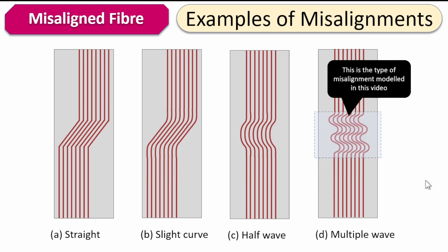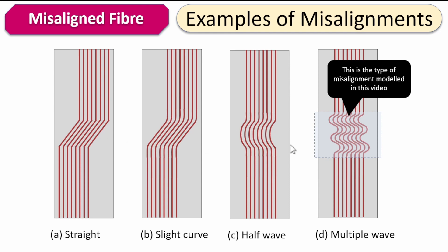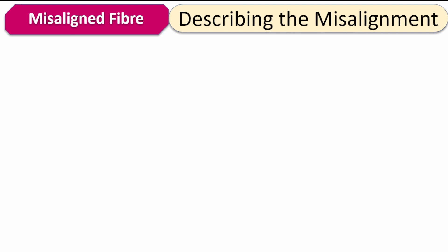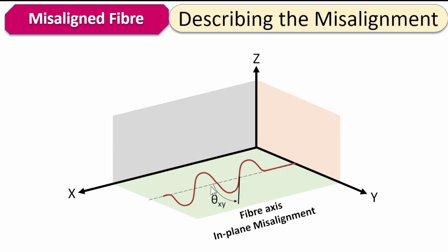What I'd like to do is focus on the most aggressive case — the multiple wave case — and model it. The same principle applies to all the other cases. In terms of describing fiber misalignment for a virtual model, I start by describing the misalignment within a rectangular coordinate system. The misalignment can take the form of a horizontal, in-plane misalignment on the XY plane. The angle of deviation is characterized by theta_xy, and I call it a fiber axis in-plane misalignment.